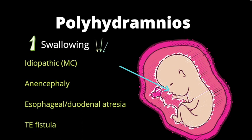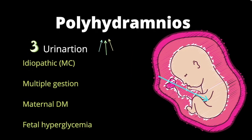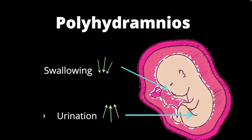The next factor contributing to polyhydramnios is increased urination. This includes multiple gestation — two babies means double the urine, so more amniotic fluid. And maternal diabetes mellitus, because the hyperglycemic state triggers an osmotic diuresis in the fetus, so they produce even more urine. So the main contributing factors to polyhydramnios are decreased swallowing and increased urination.